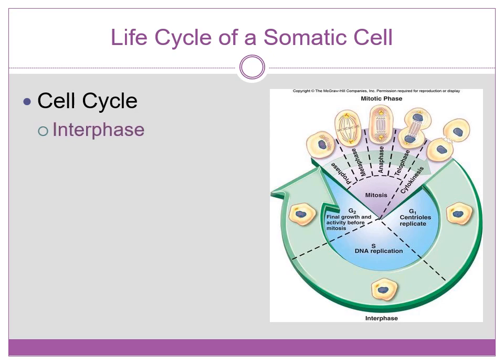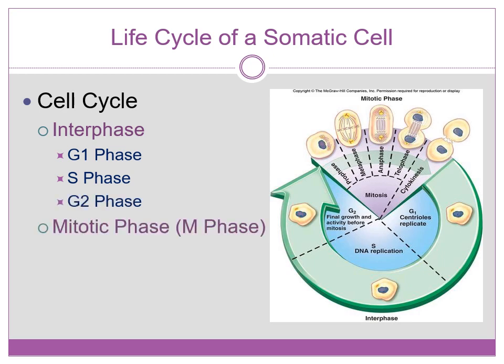The cell cycle includes interphase, which is broken up into the G1 phase, S phase when DNA replication occurs, and G2 phase. Then the M phase, or mitotic phase, that includes mitosis, cytokinesis — that's the division of the cell membrane into two distinct cells.